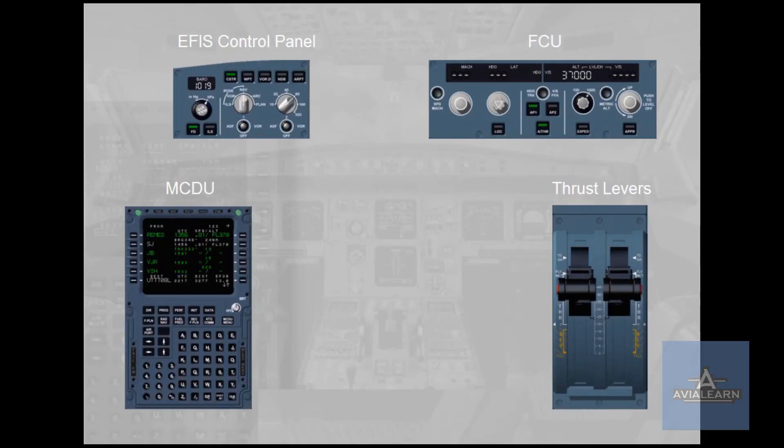In this video we will see the functions of the controls and indications of the Autoflight system in Airbus A320 family. We will talk about the Flight Control Unit, the Electronic Flight Instrument System, the Multipurpose Control and Display Unit, and the Thrust Levers.